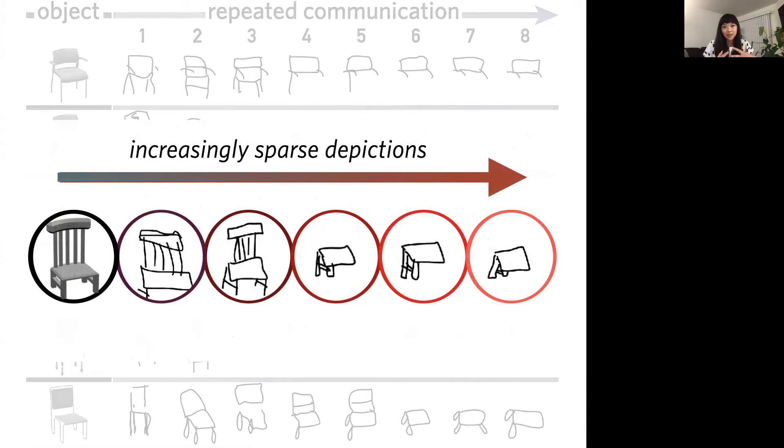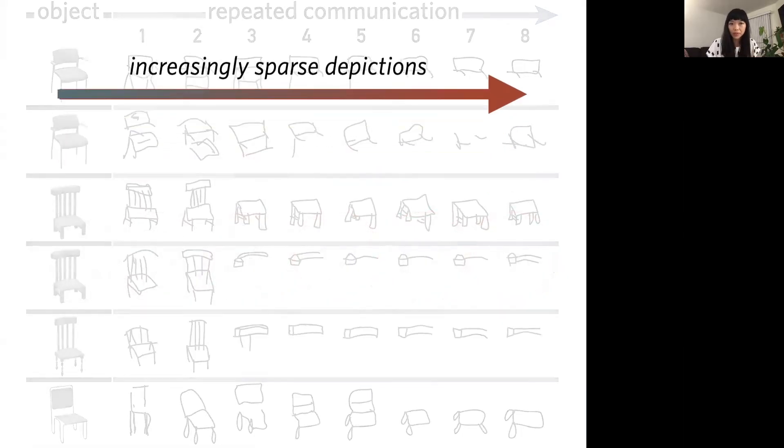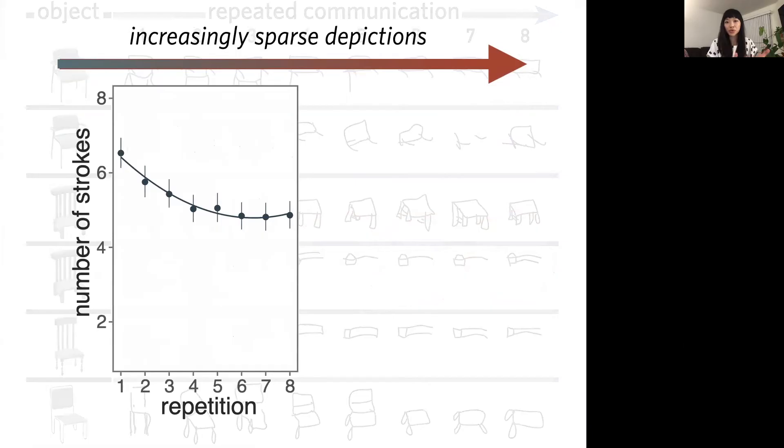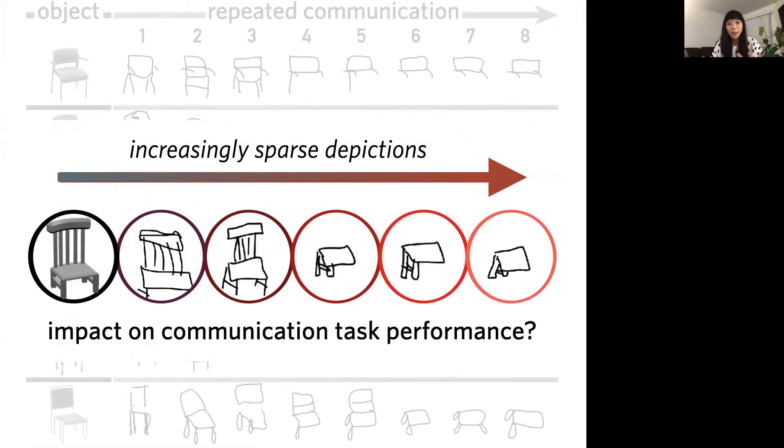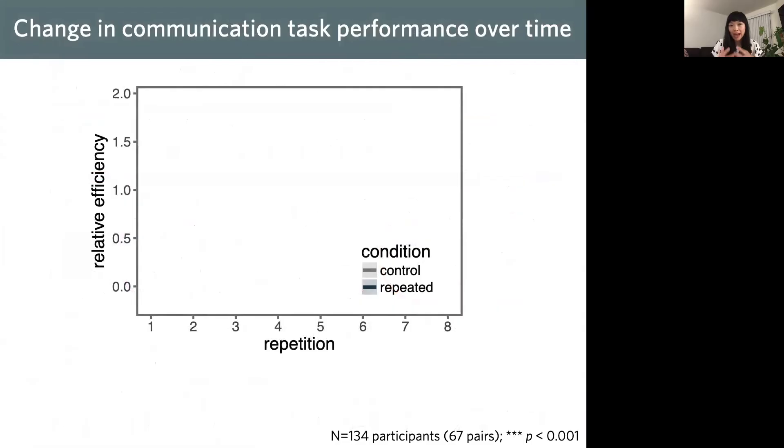What popped out to us as we scanned from left to right is how the later drawings appeared to get sparser, and this was borne out quantitatively. The number of strokes used decreased reliably across repetitions, which naturally made us wonder what impact this was having on their ability to communicate. Were participants just getting tired, losing steam? So here I'm going to show you a plot of how well participants were performing the core communication task over time across repetitions of each object. We primarily measured task performance in terms of efficiency, which we preferred because it balances gains in accuracy against changes in response time, though we basically see the same trend when we measure accuracy and RT alone.